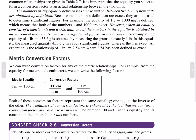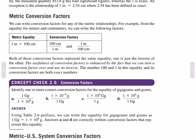Metric conversion factors. You can write a conversion factor for any metric relationship. For example, from the equality of meters and centimeters — 1 meter equals 100 centimeters — you can write: 100 centimeters per meter, and 1 meter per 100 centimeters. Both conversion factors represent the same equality; one is the inverse of the other. The usefulness of conversion factors is enhanced by the fact that we can turn a conversion factor over to get its inverse. The numbers in this equality and its conversion factors are both exact.